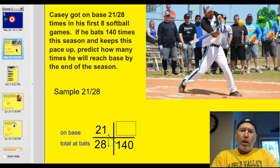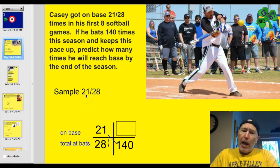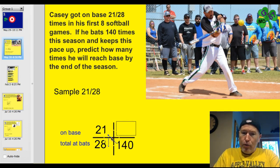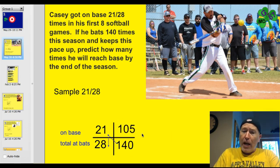Casey got on base 21 out of 28 times in his first eight softball games. If he bats 140 times this season and keeps up this pace, predict how many times he will reach base. We have a sample of 21 times on base out of 28 total at bats. We want to know how many times on base out of 140. We set up a ratio proportion: multiply diagonally 140 times 21, then divide by 28, and you'll find that it's 105 — he will probably reach base 105 times.